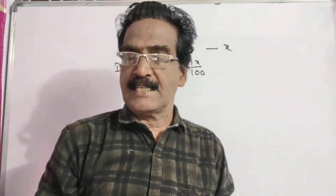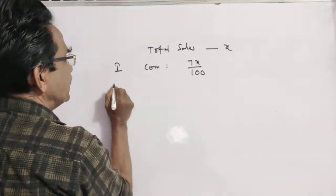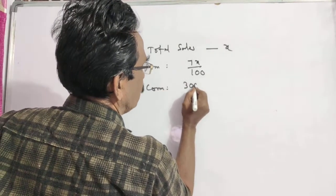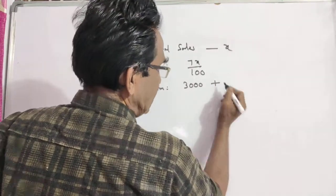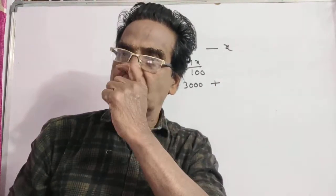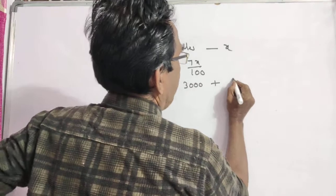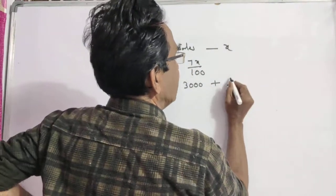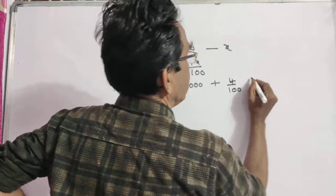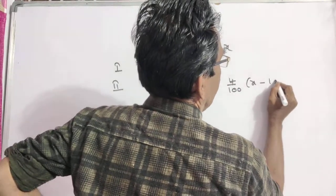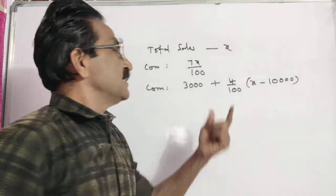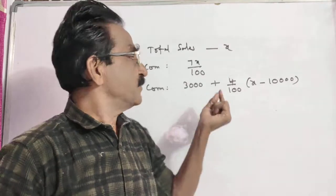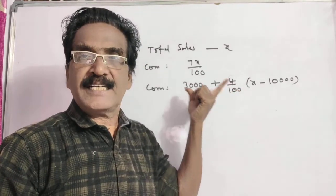In the second case, his commission is a fixed salary of Rs. 3000 plus 4% commission on all the sales exceeding 10,000. This is the commission he receives in the first case. This is the commission he receives in the second case.